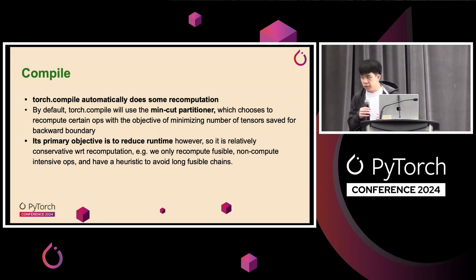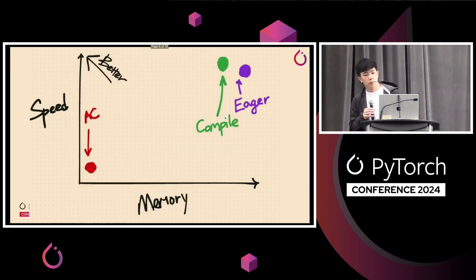Another thing we want to put in perspective is what happens when you compile. So Torch.Compile automatically does some recomputation similar to how checkpoint does recomputation. And by default, Torch.Compile uses the MinCut Partitioner, which chooses to recompute certain ops with the objective of minimizing the number of tensors saved for backward. And this sounds a lot like what we want to do, but it's not exactly true, since the primary objective of Torch.Compile is actually to reduce runtime. So we place certain limitations on what MinCut Partitioner is able to recompute. For example, we are only able to recompute fusible, non-compute intensive ops, and have some kind of heuristic to avoid long fusible chains. So going back to this diagram here, relative to Eager, compile improves both on the speed and memory, so it's sort of on the top or top left of Eager. But relative to AC, it's still quite conservative with respect to how it does recompute, and therefore it still uses some more memory.